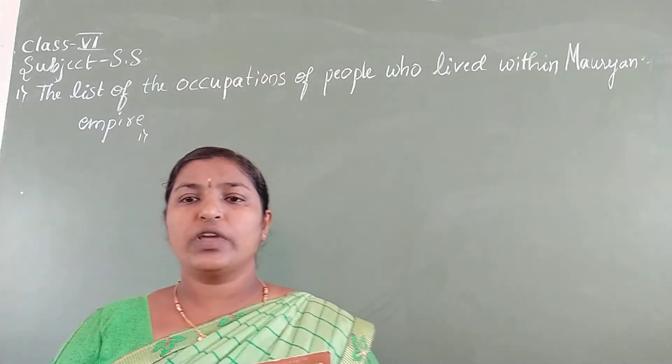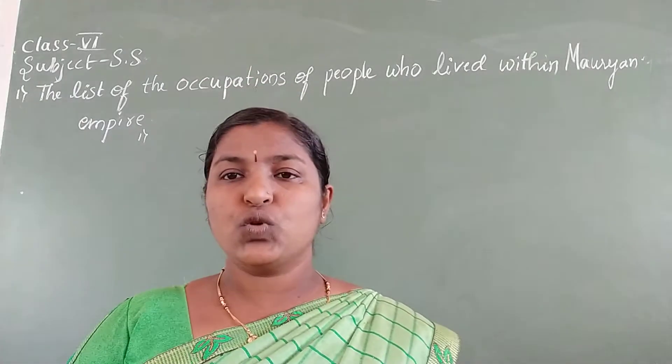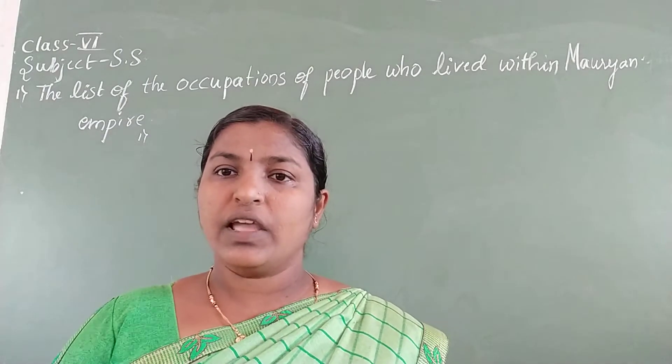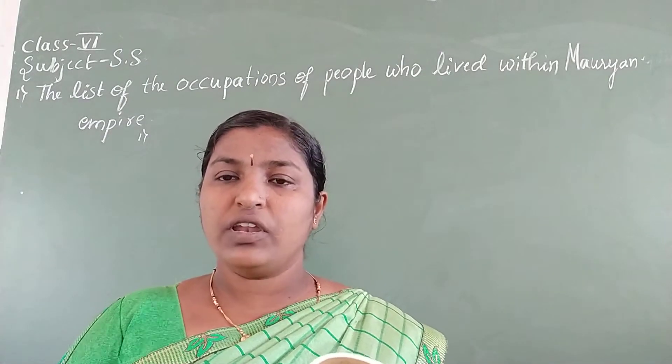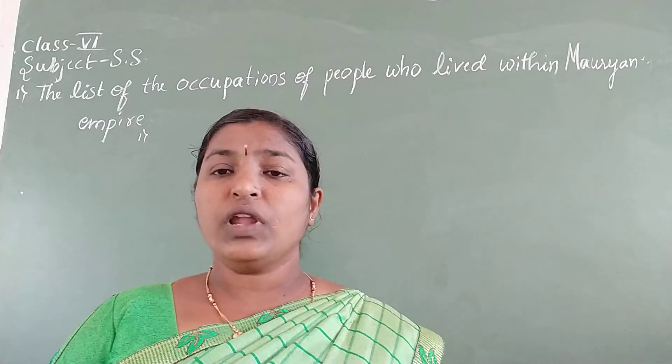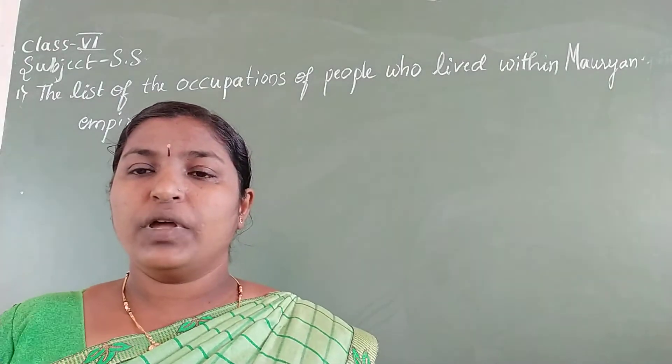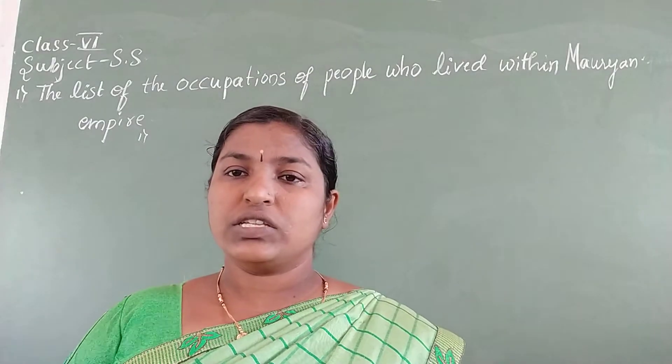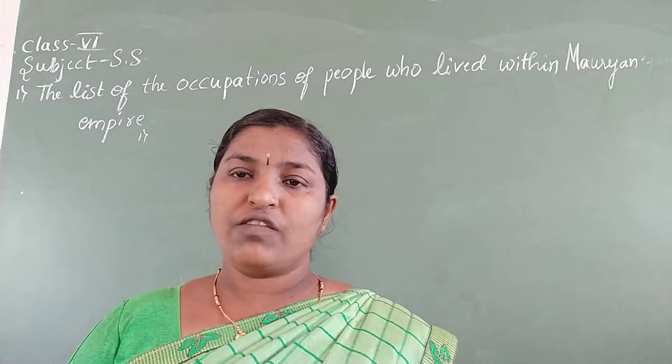Hello children, welcome to Keralakam Memorial CBSE School Online Classes. In our previous class I completed the explanation of Chapter 7, Ashoka, the Emperor who gave up war. Last exercise question answers and some notes I'm going to give you.